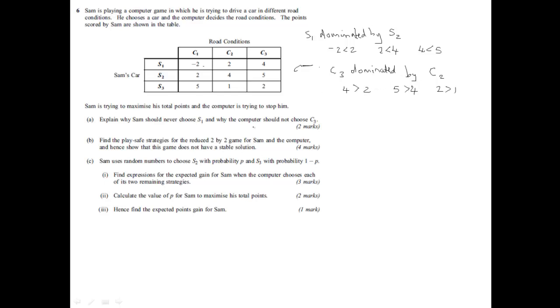OK, so that's part A answered for two marks. For part B it says find play-safe strategies for the reduced 2x2 game. So let's start by writing what's left. We've lost all of S1 and all of C3. So that only leaves the 2 and the 4 and the 5 and the 1. It just leaves these four elements here.